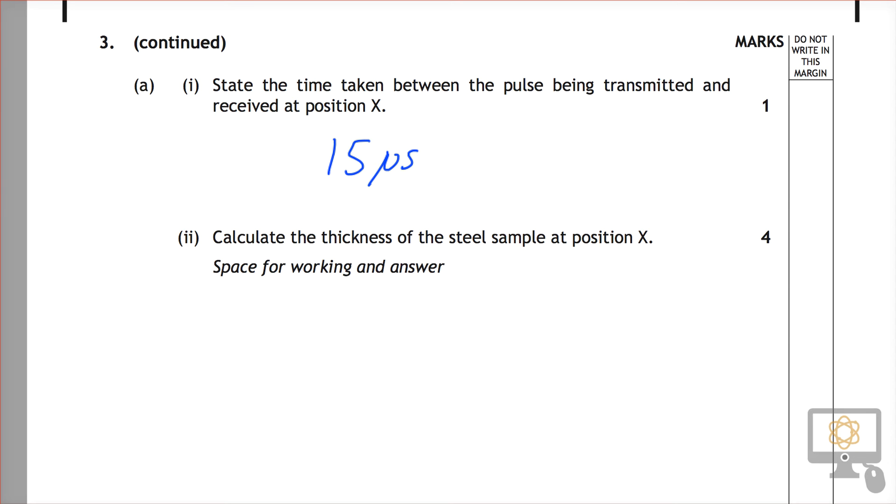I'd like to look at question 3a part 2 from the National 5 2015 physics paper. It says calculate the thickness of the steel sample at position X. We've already determined that the time taken at position X is 15 microseconds.